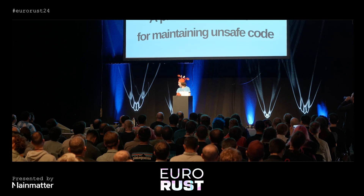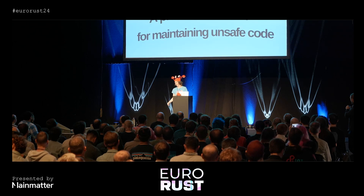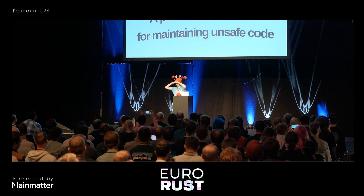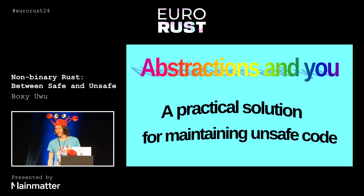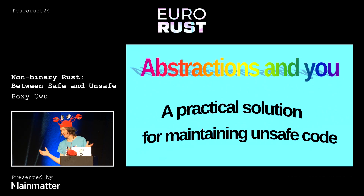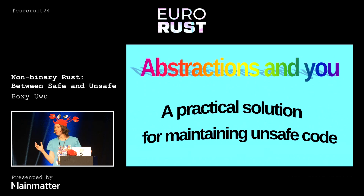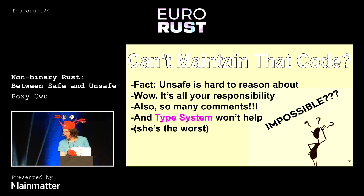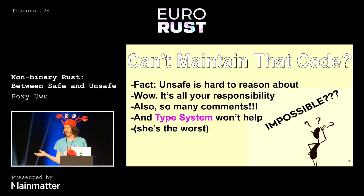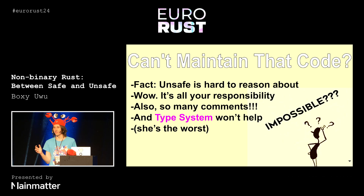Writing unsafe code is very difficult. If you have lots of it, it becomes extremely complicated, and typically the tool we have in Rust for making large codebases easier to work in is writing an abstraction so you don't have to think about everything. Typically the tool we have for this is abstractions, and in unsafe code we often write abstractions to fully encapsulate all of the unsafety.